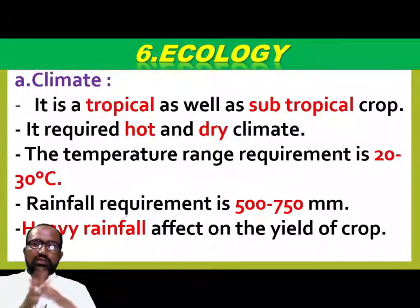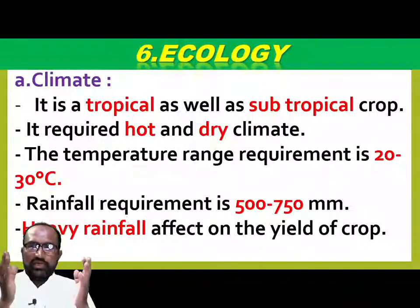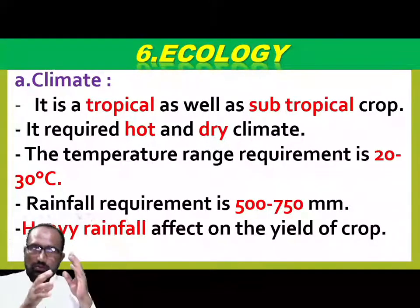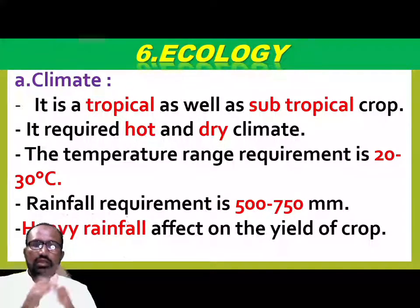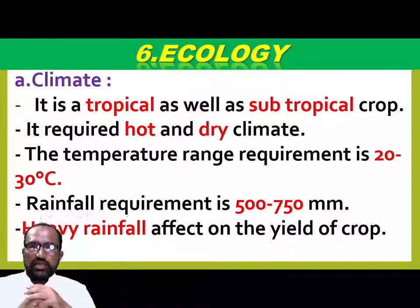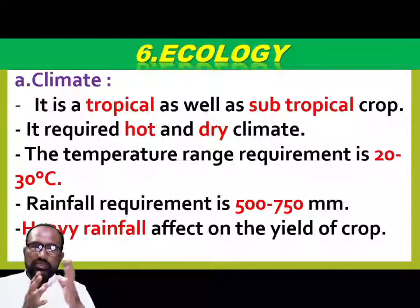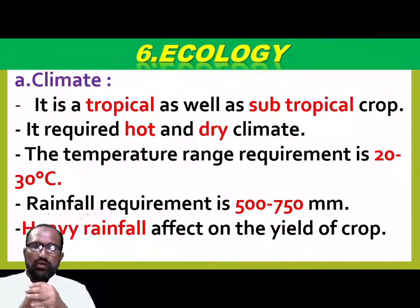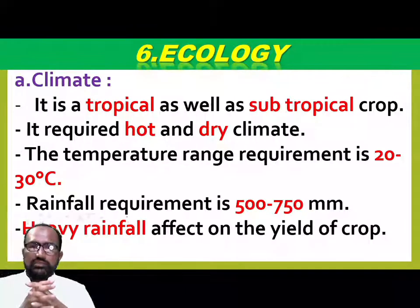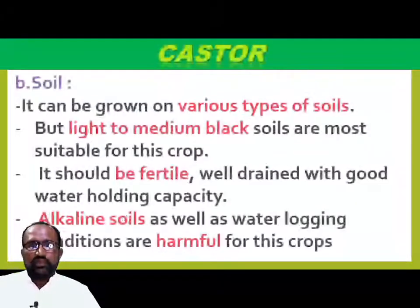Next, ecology and climate: Castor crop is a tropical and subtropical crop. It requires a hot and dry climate. The temperature range requirement is 20 to 30 degrees Celsius. Rainfall required is about 500 to 750 mm. Heavy rainfall adversely affects the yield of the crop - excess rainfall reduces production.